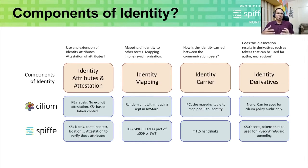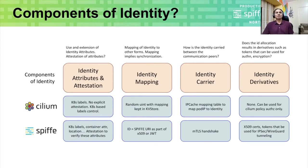Identity derivatives: does the ID allocation result in any derivatives such as tokens or credentials, which can in turn be used for other purposes such as authentication and encryption? In case of Cilium, there are no such derivatives — the Cilium identity mechanism can be used only for Cilium policy authorization. In case of SPIFFE, X.509 certificates are provisioned and these certificates or tokens could in turn be made use of for other purposes, such as credentials for IPsec or WireGuard tunneling.